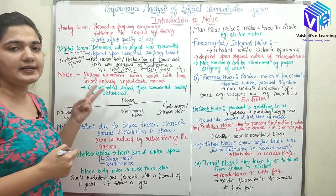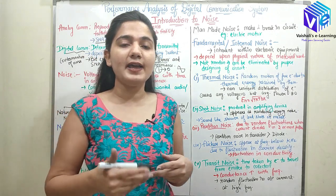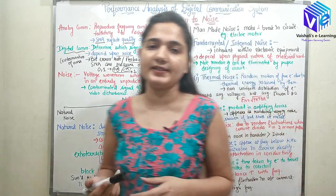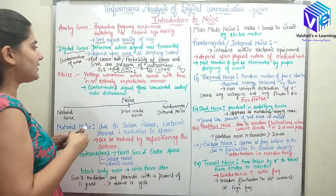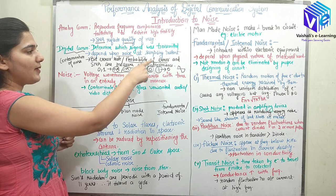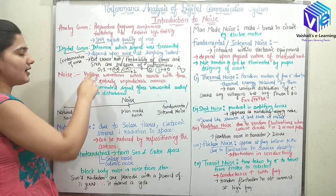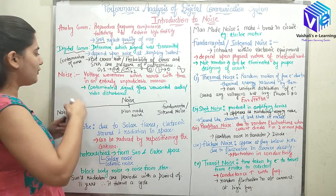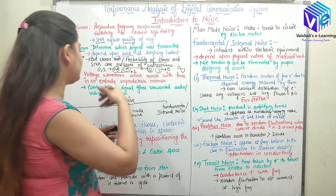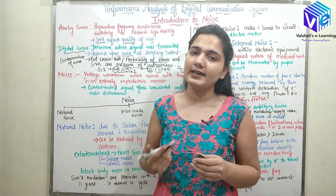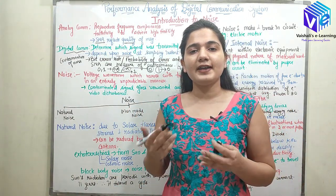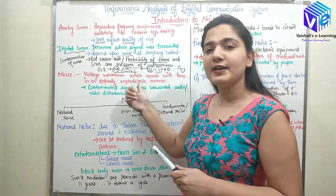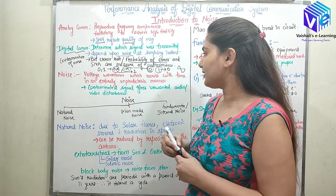In digital communication, the two quantities that affect the received message are bit error rate (probability of error) and SNR. Now, noise — the topic of this video — is the voltage waveform which varies with time in an entirely unpredictable manner. If we could predict it, we would not call it noise. Since noise varies in an unpredictable manner, it is called a random signal.